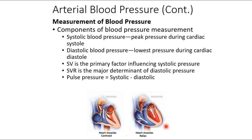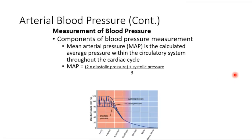If we don't specify atrial or ventricular systole, we're talking about ventricular systole. Systolic blood pressure peaks during ventricular systole; diastolic blood pressure is the lowest pressure. Stroke volume is the primary factor influencing systolic pressure; systemic vascular resistance is the major determinant of diastolic pressure.